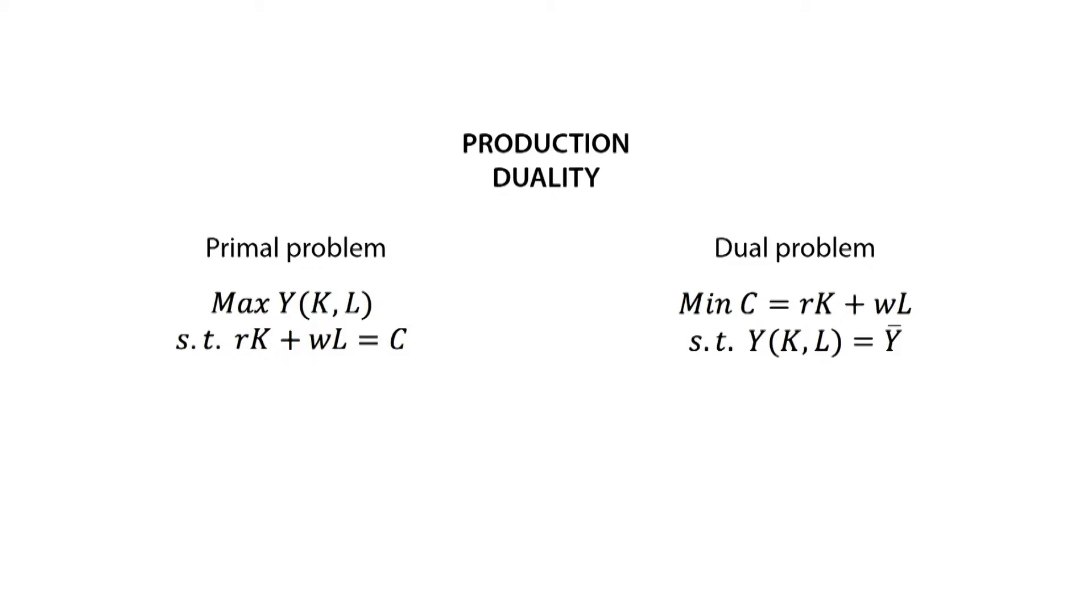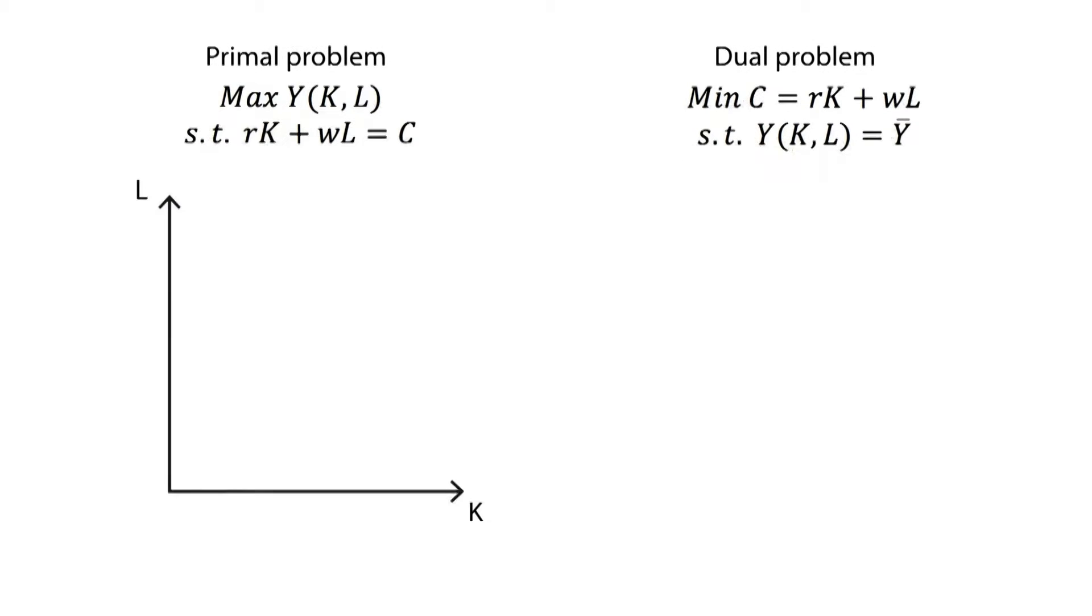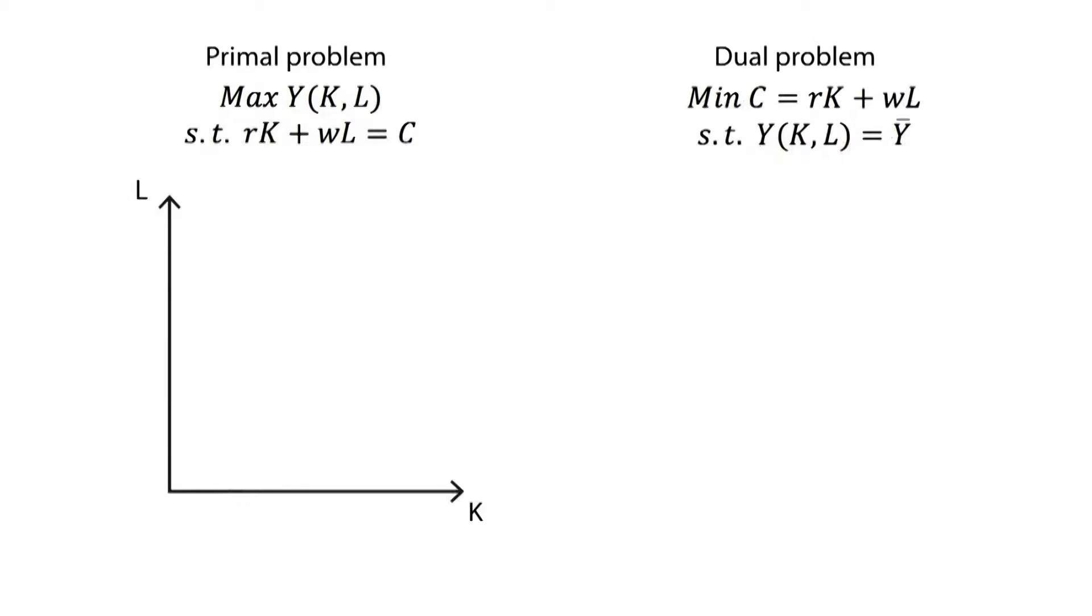Since only two inputs are considered, these two equations can be graphically represented. The x-axis or horizontal axis shows the amount of capital K used in the production process, while the y-axis or vertical axis shows the amount of labor L needed.